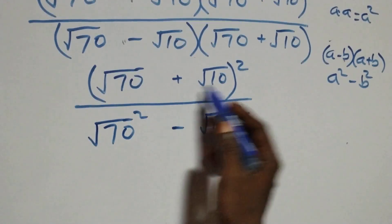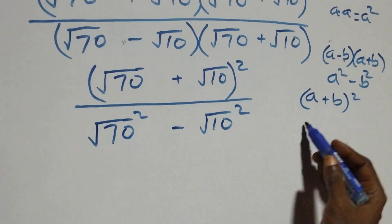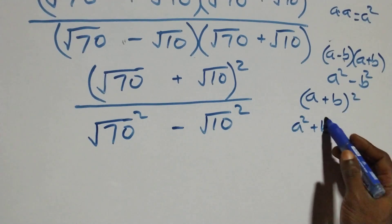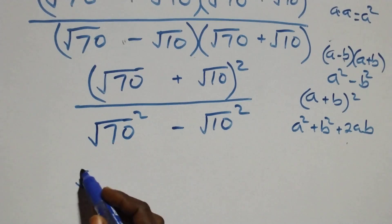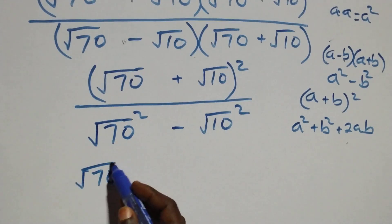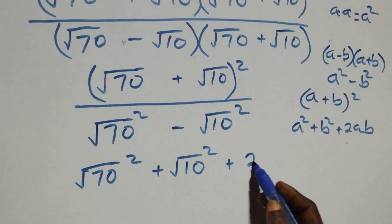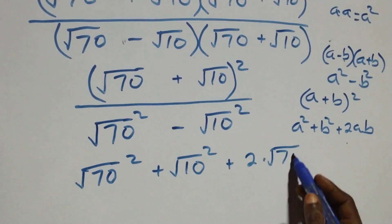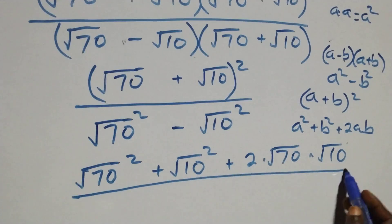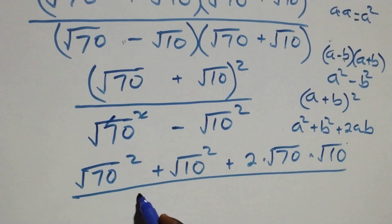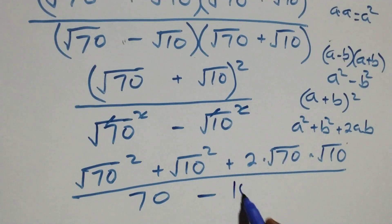Expanding (√70 + √10)² using a² + b² + 2ab: we get (√70)² + (√10)² + 2 times √70 times √10, divided by 70 − 10 = 60.